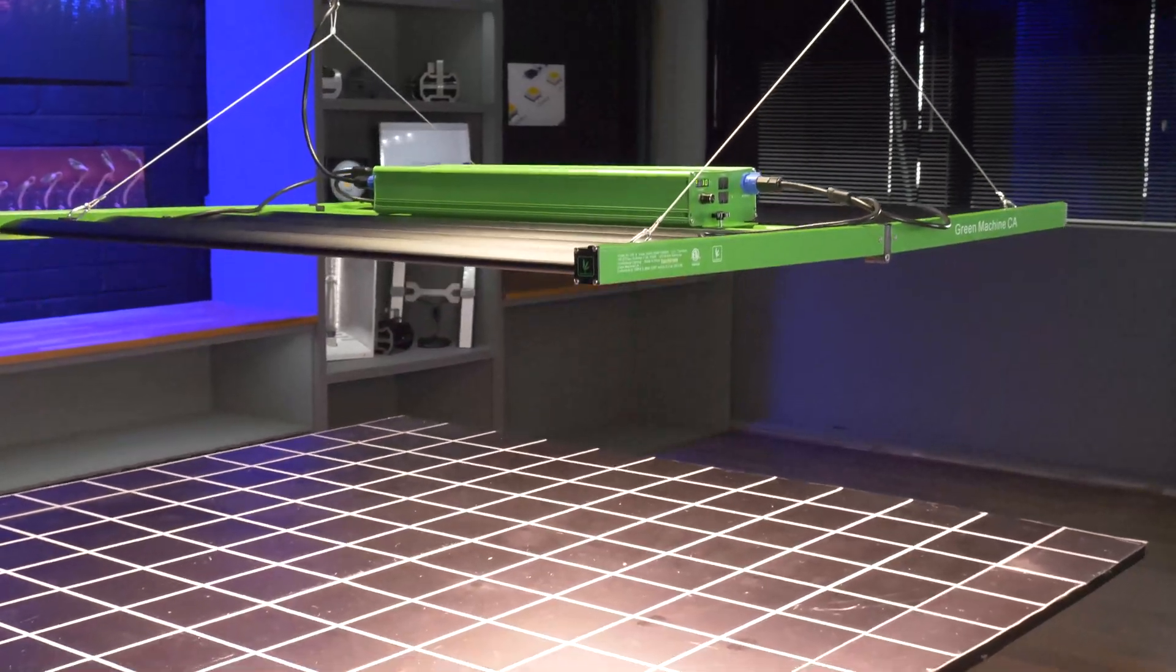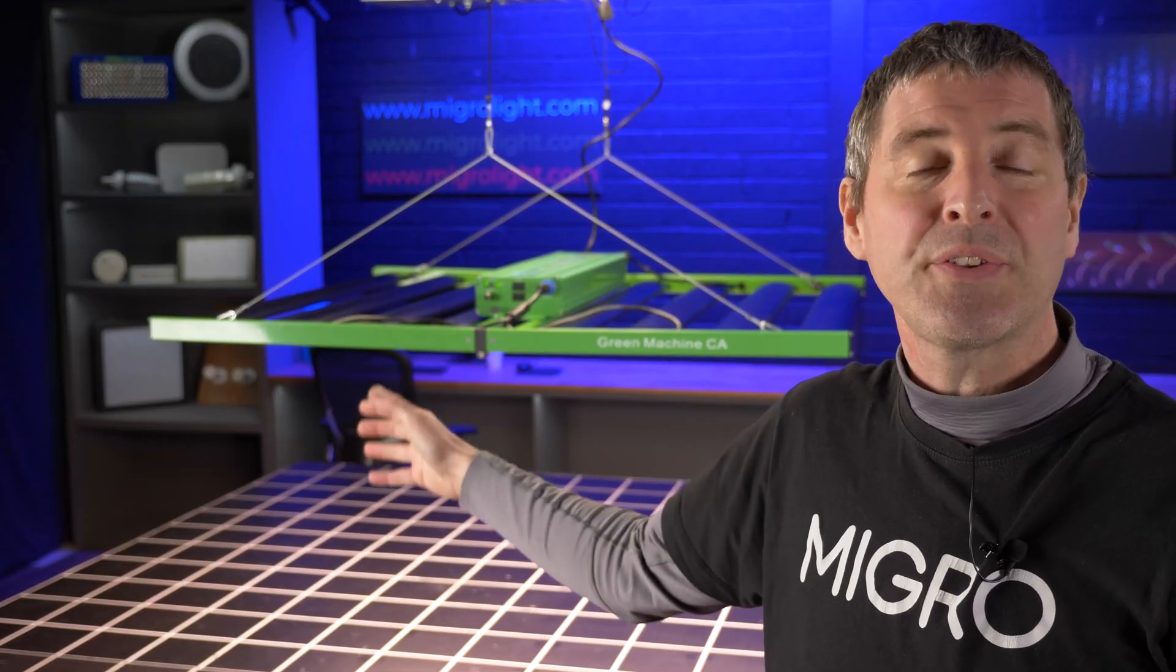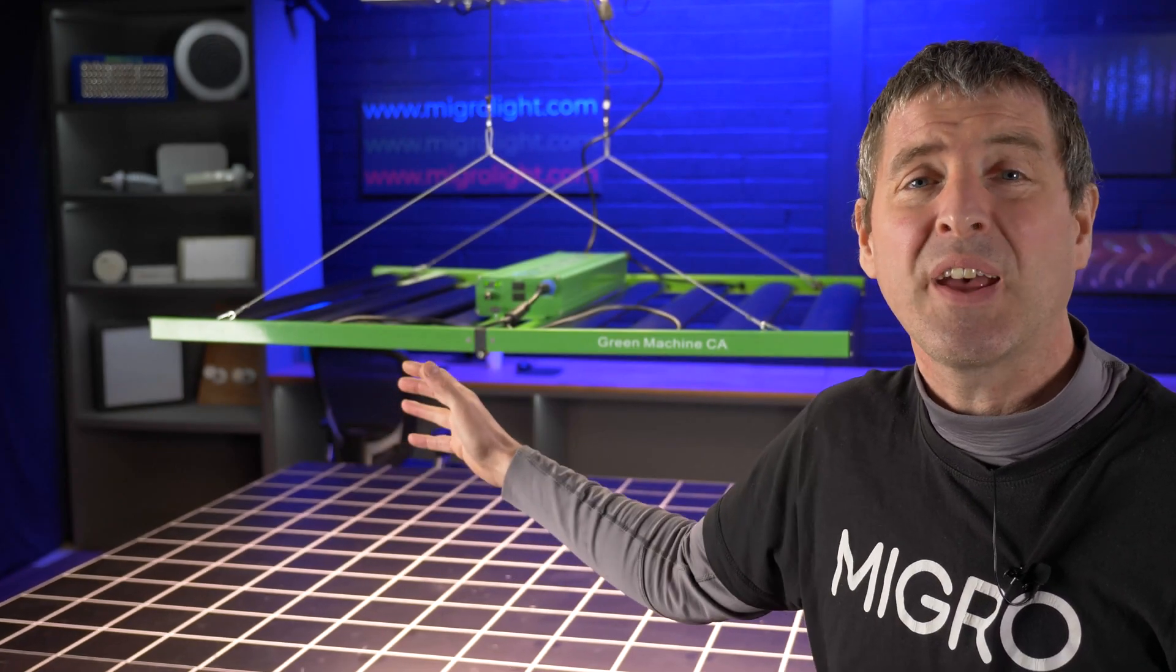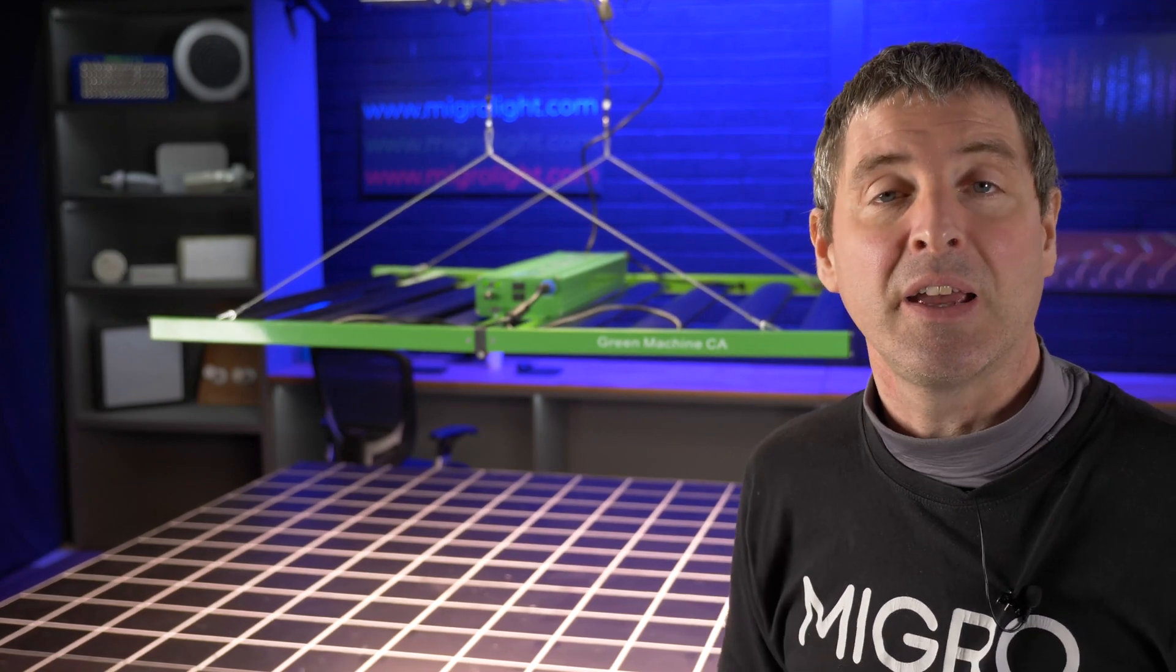See here, it's an 8 bar LED grow light, large unit, about 650 watts of power output. That's white and 660 nanometer reds, all Samsung high-end LEDs.